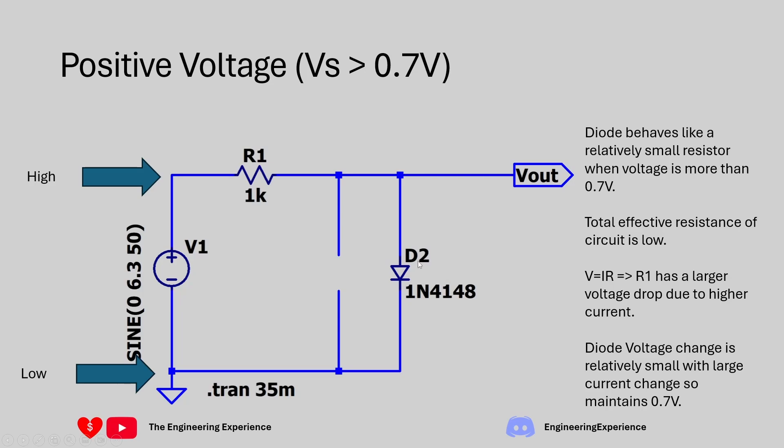The current that the diode drops will be limited by this 1 kilo ohm resistor. However this voltage will be maintained very close to 0.7 volts. But as the current does increase so you know as you increase this sine wave up to 6.3 volts the diode will start to increase its voltage drop and you can see the in simulation that I have at the end.